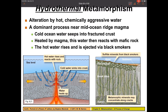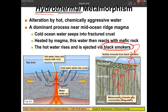Hydrothermal metamorphism involves hot water, and it mostly occurs on the ocean floor. As water recycles through the ophiolite sequence, it gets heated up along the way. Hot water dissolves things better than cool water, so as it works its way back up it dissolves mafic material. When that water comes out at the top, this is how we get black smokers — it's not actually black smoke, but water with a lot of dissolved mafic material in it. Because this is driven by temperature, it produces non-foliated metamorphic rocks.